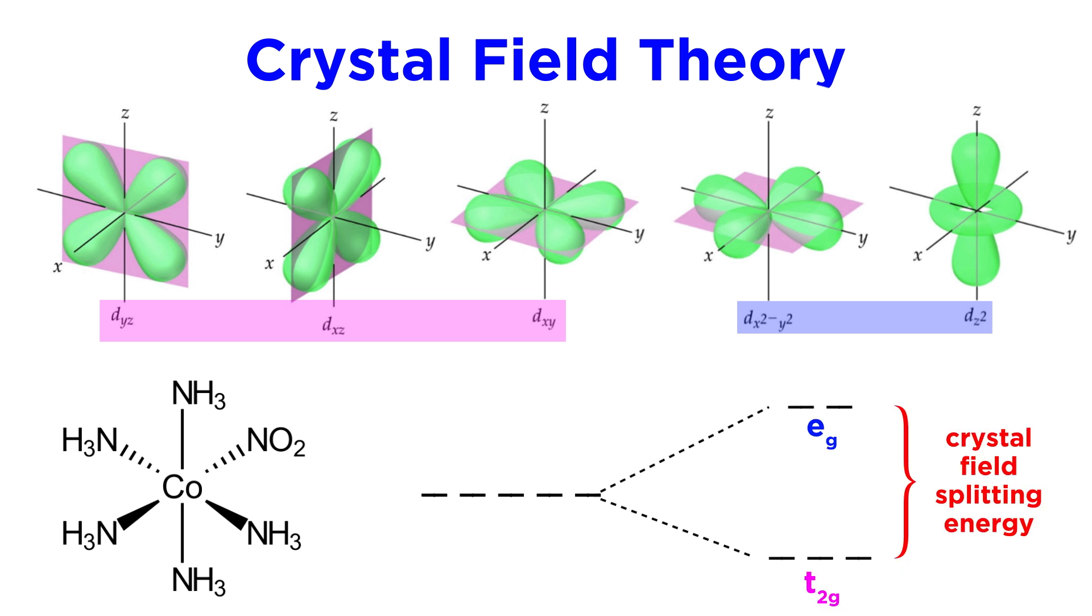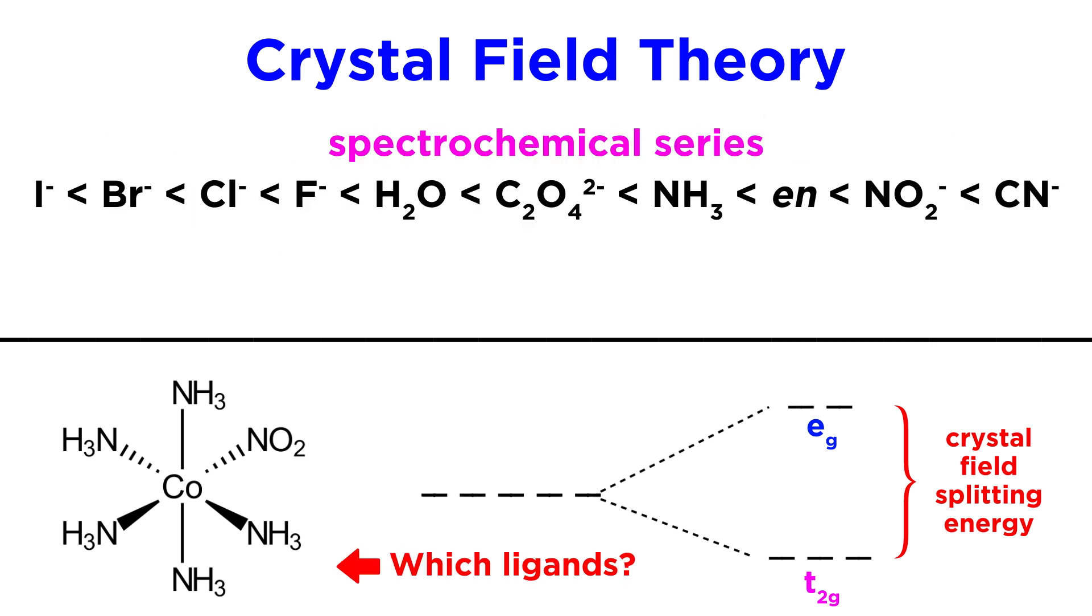The difference in energy between these two sets of orbitals is called the crystal field splitting energy. The magnitude of this energy gap will depend on whether the orbitals involved are 3D, 4D, or 5D orbitals, as well as the identity of the ligands themselves, with the impact following this trend here, called the spectrochemical series.